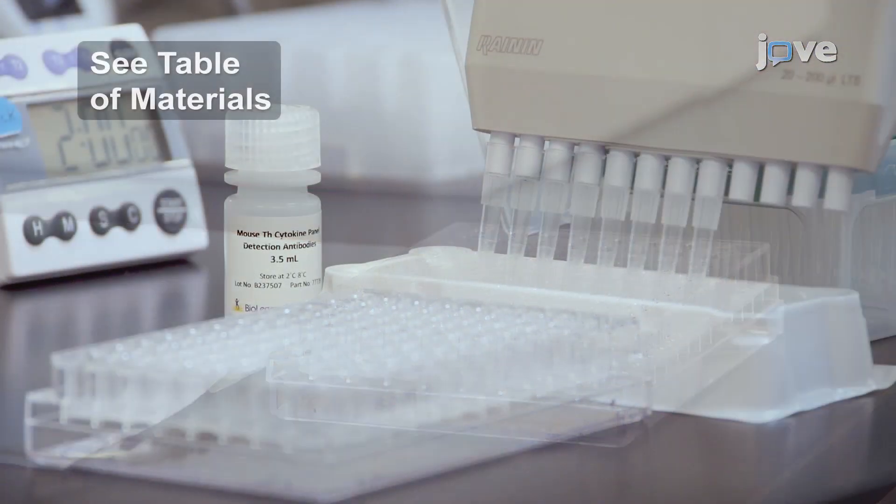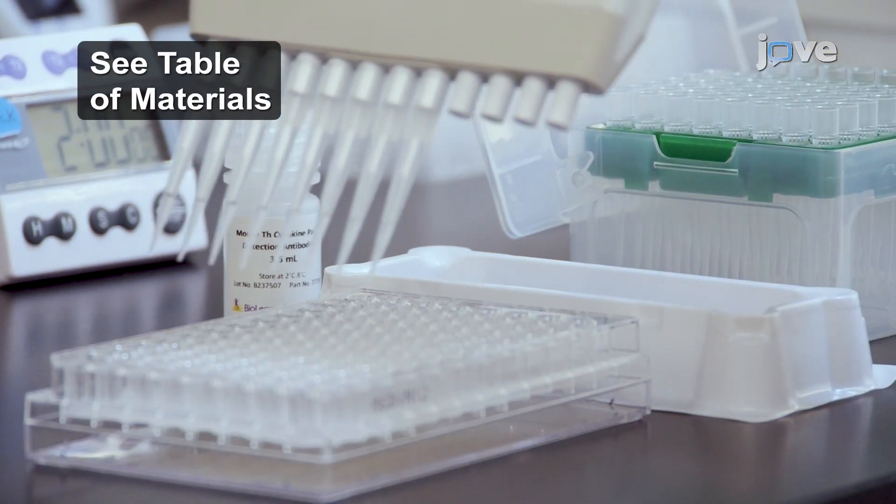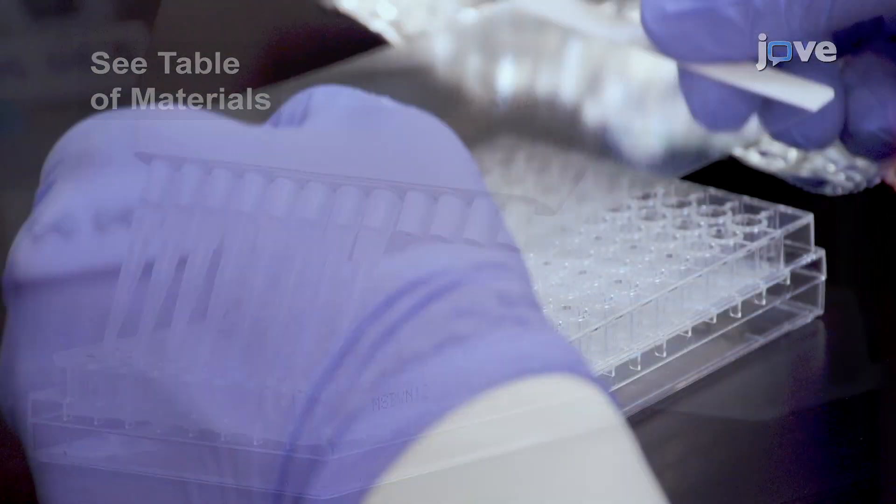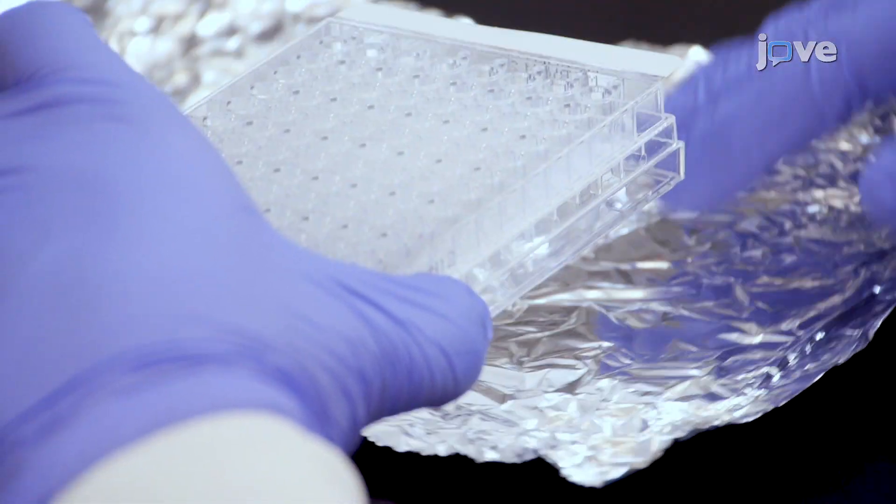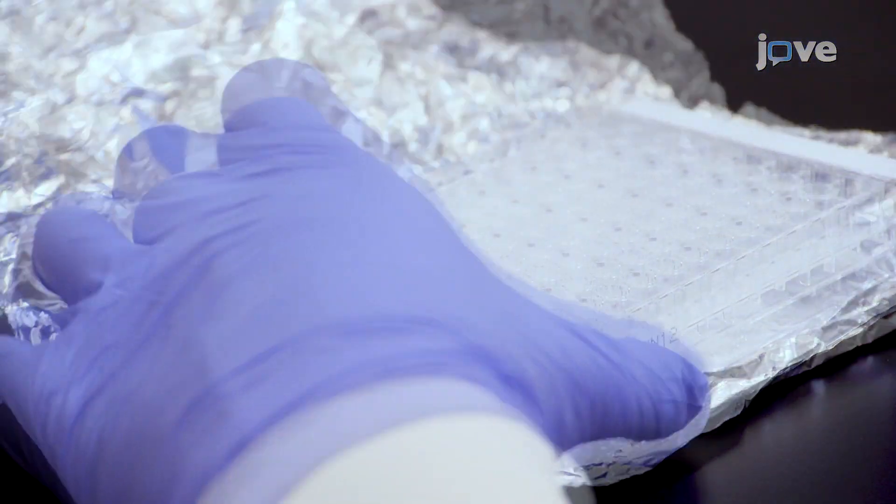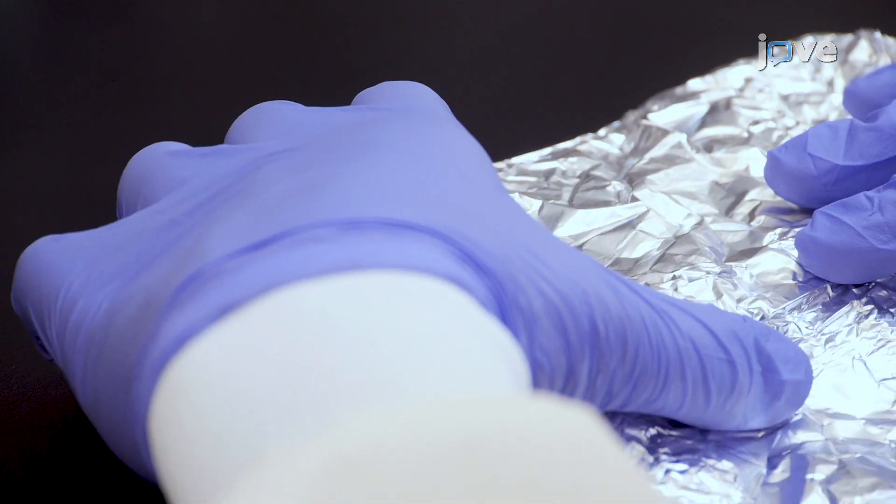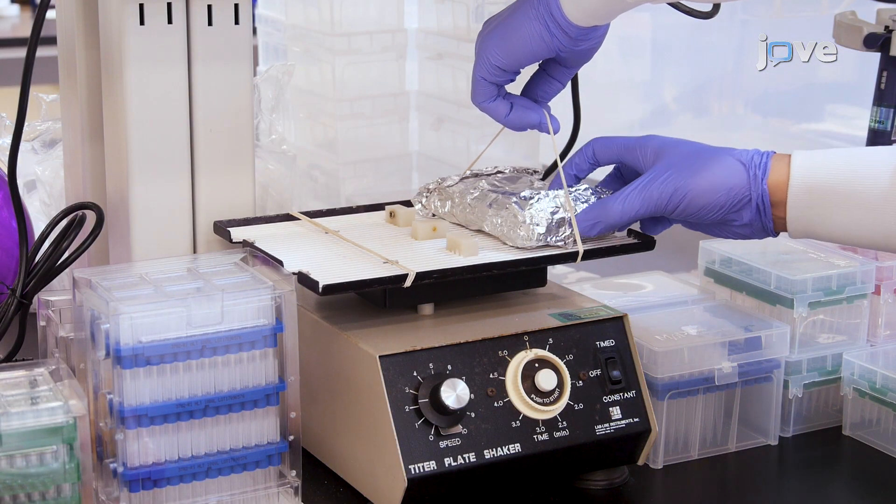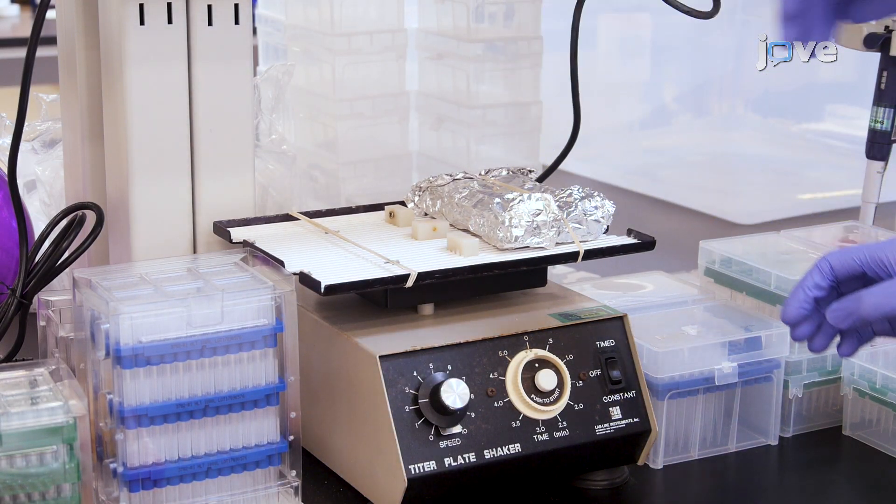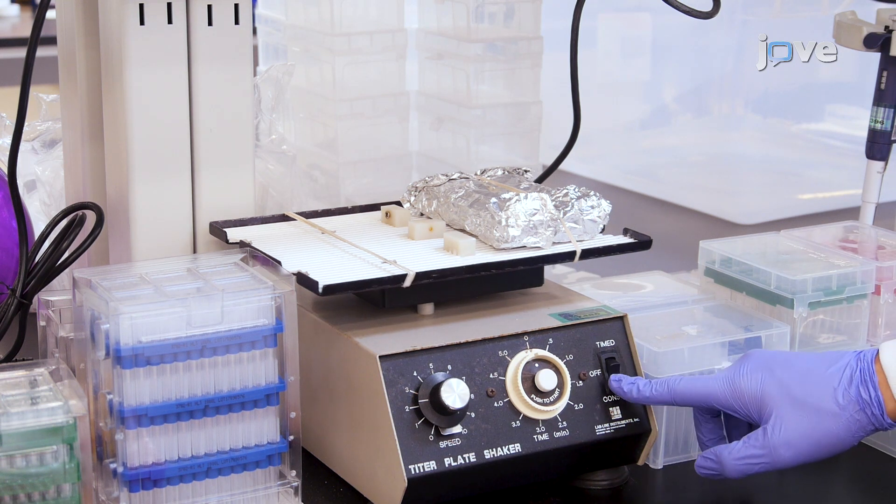Next, add 25 microliters of detection antibodies to each well. After sealing the plate with a fresh plate sealer, wrap the entire plate, including the inverted plate cover, with aluminum foil. Place the plate on a plate shaker, and shake at approximately 500 RPM for 1 hour at room temperature.